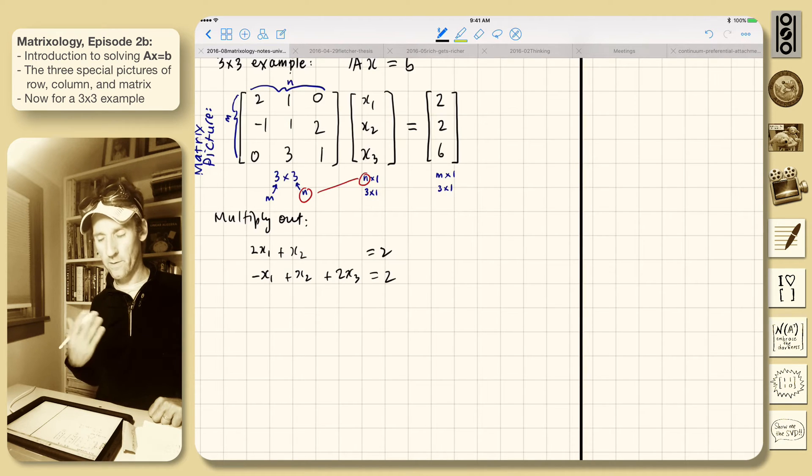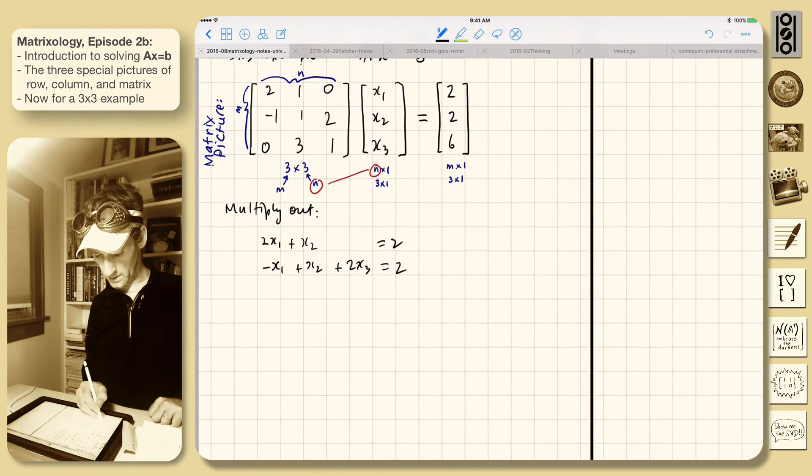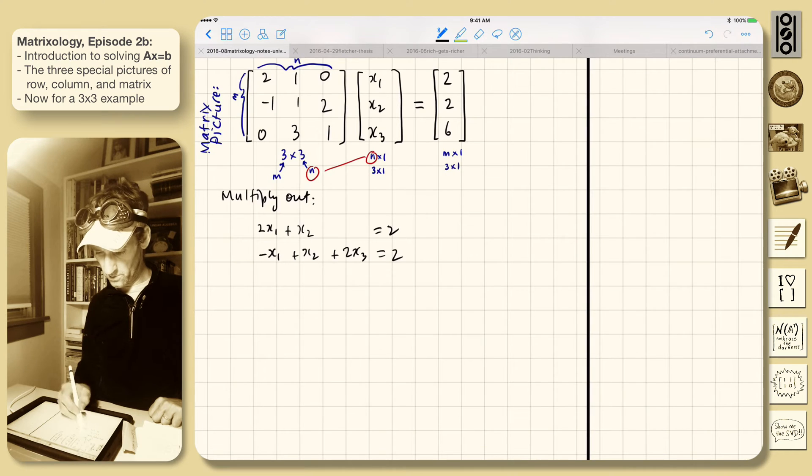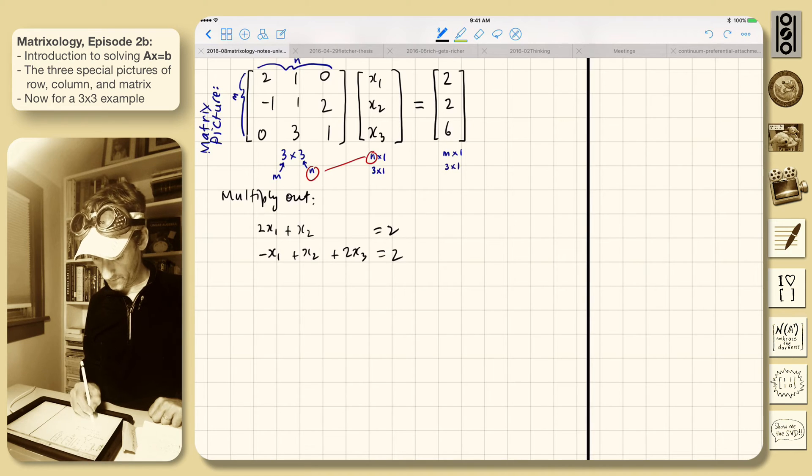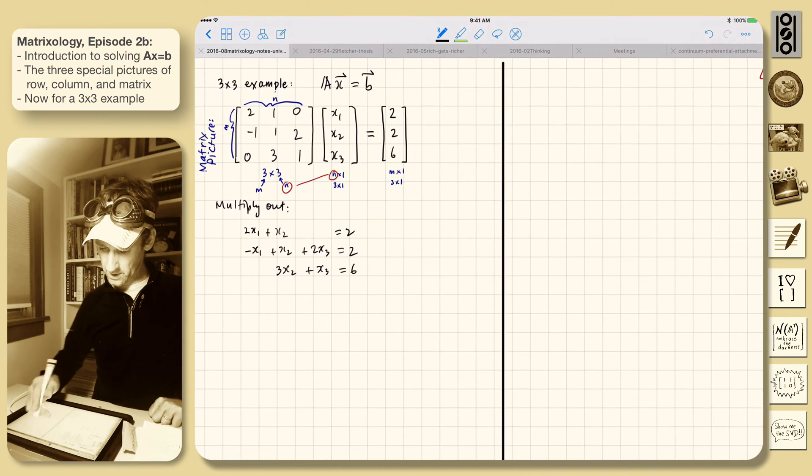And then we do the same thing for the third row times the vector here. So there's a 0 in the first entry, right? So nothing, a 3 times x2, a 1 times x3. And all of this has to equal 6. That is fun. So 3x2 plus x3 has to equal 6. All right, so this is our row picture.